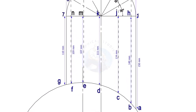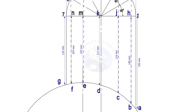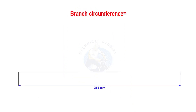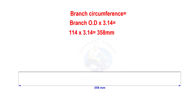Note down the distances G7, Fn, etc. Draw a straight line — the length shall be of the circumference of the branch. The branch OD is 114 mm. Multiply 114 by 3.142. Divide the line into 12 equal parts. The length of each segment shall be nearly 29.8 mm.